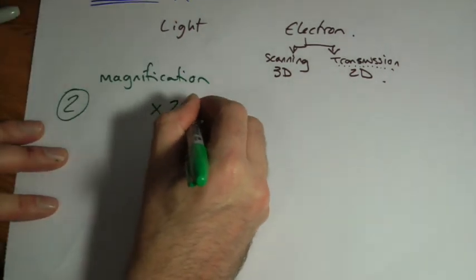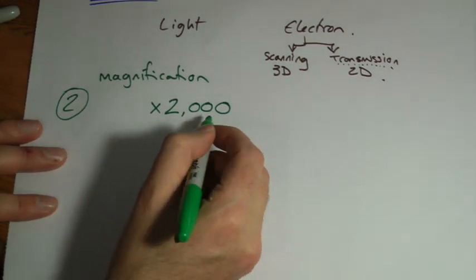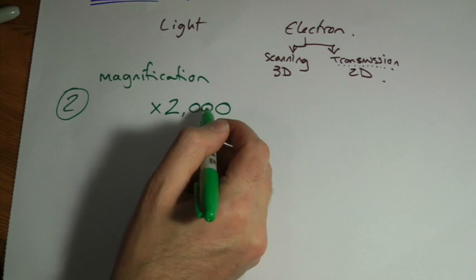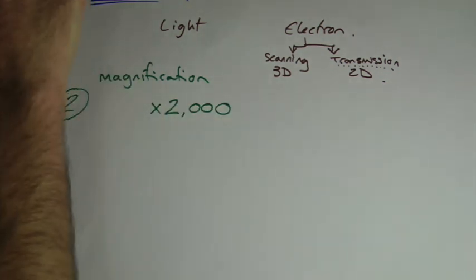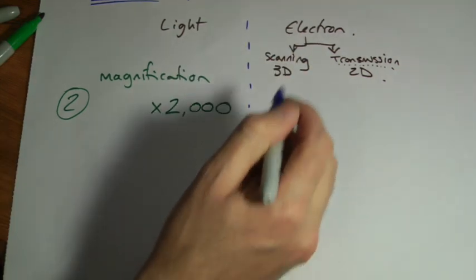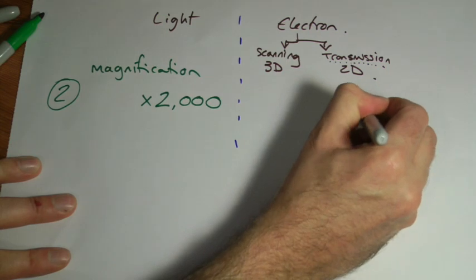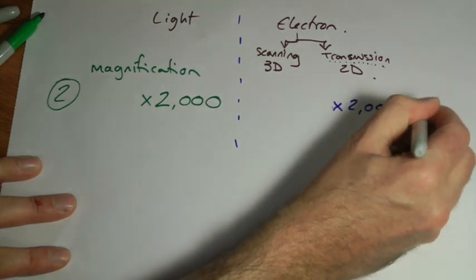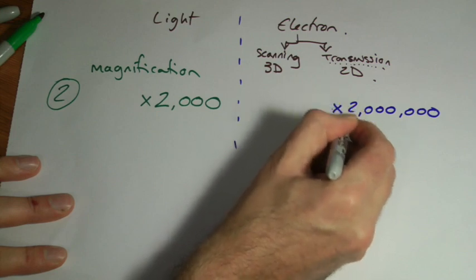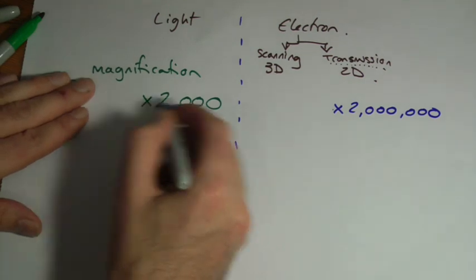The magnification of a light microscope is about up to 2,000 times. So if I looked at an object I could make it look about 2,000 times bigger. Different color here. Electron microscopes. A transmission one can go up to about 2,000,000 times. Notice here how I'm putting the X to show magnification. We put it at the beginning, that means times.